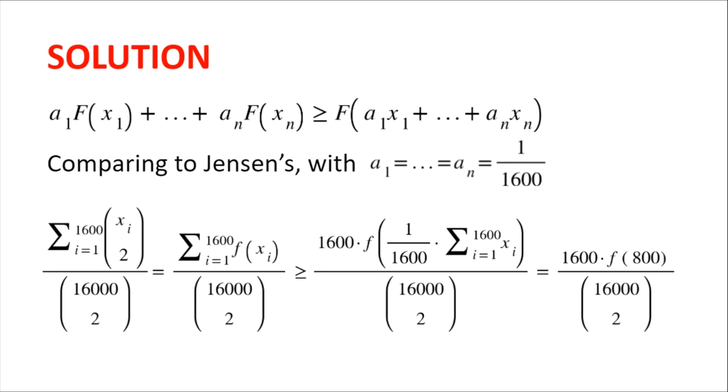Now we can compare this to Jensen's, setting a1 equals a2 equals a3 equals an as 1 over 1600, which will give us the sum of xis choose two divided by 16,000 choose two greater or equal to 1,600 multiplied by f of 1 divided by 1600 multiplied by the sum of xis divided by 16,000 choose two, which we can simplify as 1600 multiplied by f of 800 divided by 16,000 choose two.